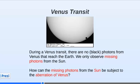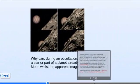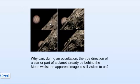Now let's look at an occultation — the occultation of Jupiter by the Moon. The question is the following: if you have Jupiter with aberration and the Moon without aberration, then if Jupiter is behind the Moon, how can we see the planet if it's already behind the Moon?